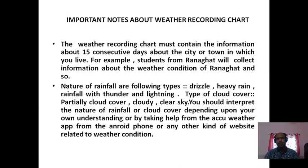The nature of rainfall types to use are: drizzle, heavy rain, and rainfall with thunder and lightning. For cloud cover, the terms to follow are: partially cloudy, cloudy, and clear sky.